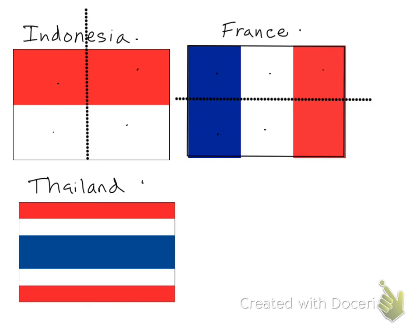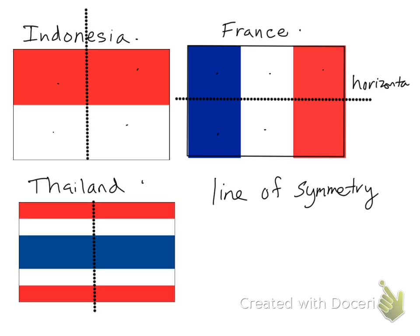We fold the Thailand flag in half this way because the left and right halves look exactly the same. The fold line is what we call a line of symmetry. France has a horizontal line of symmetry because it's a horizontal line. Indonesia and Thailand have vertical lines of symmetry.